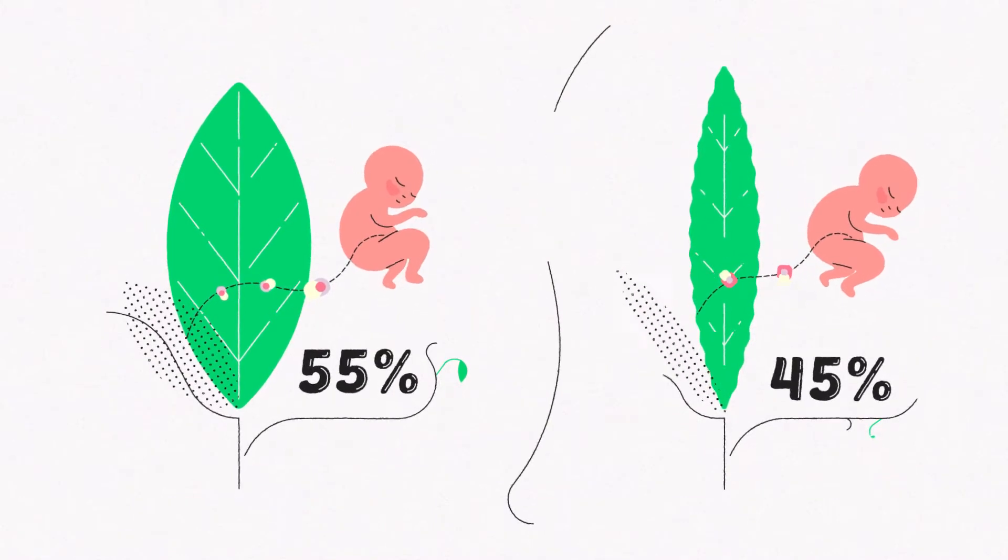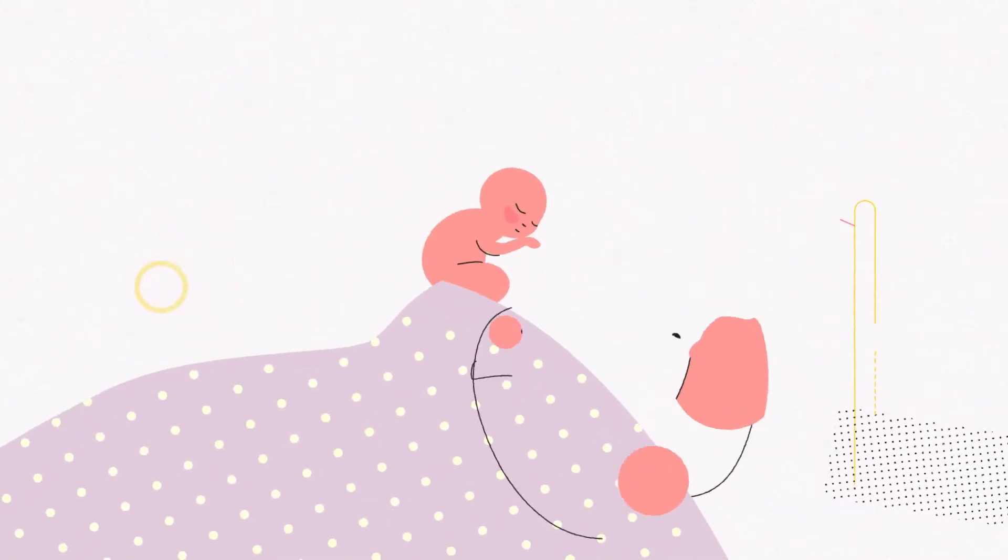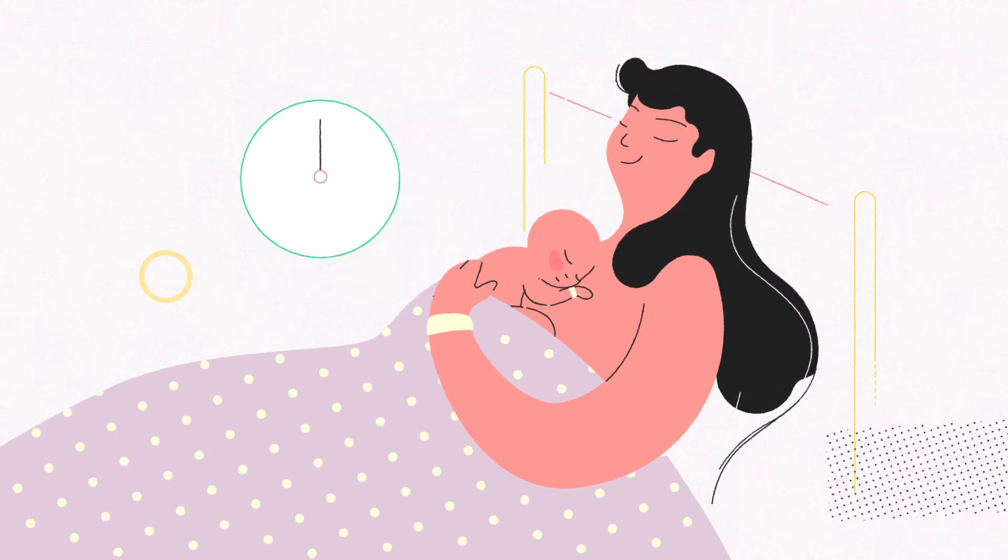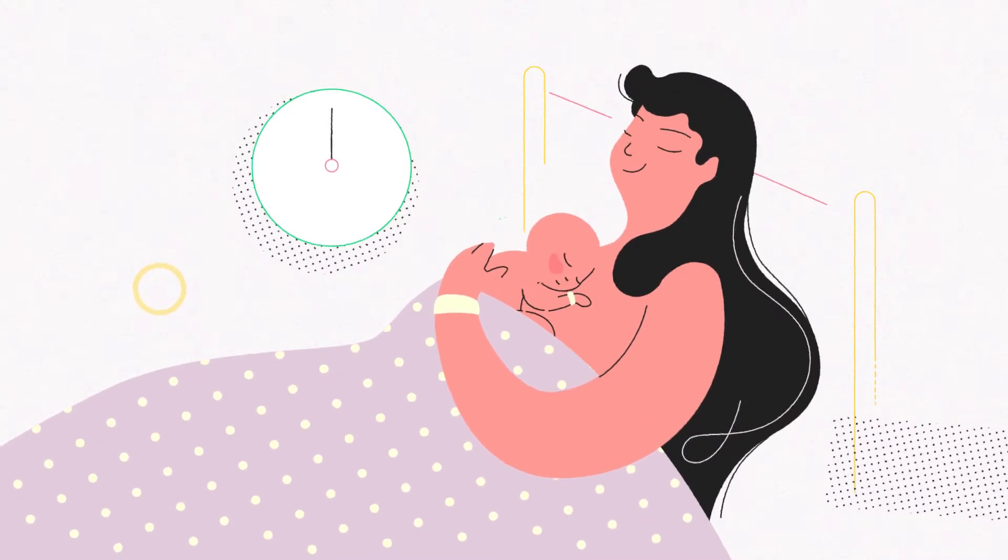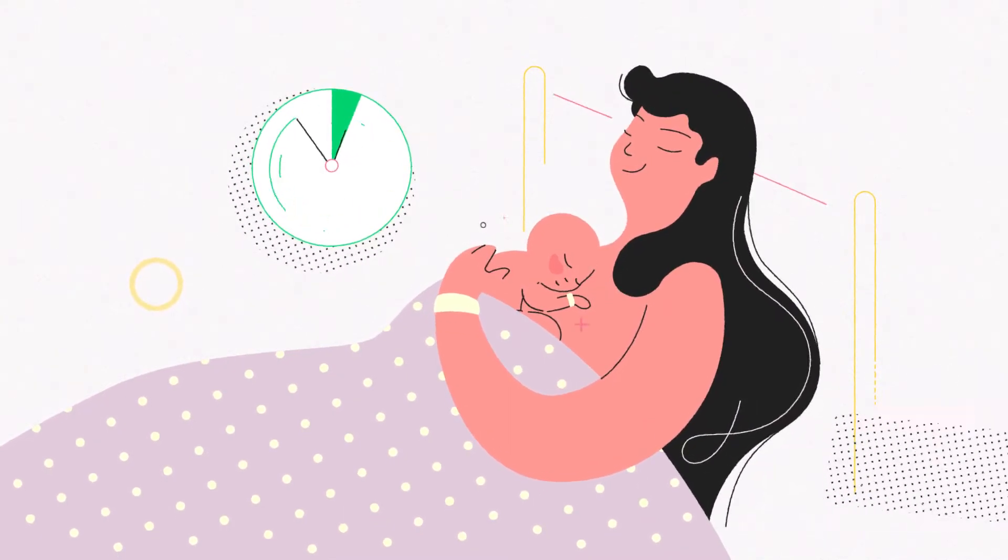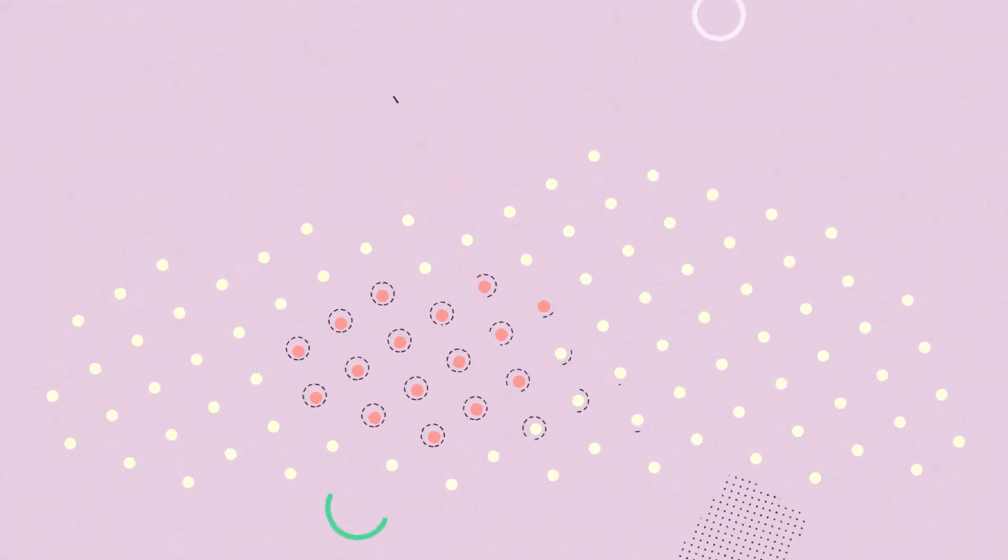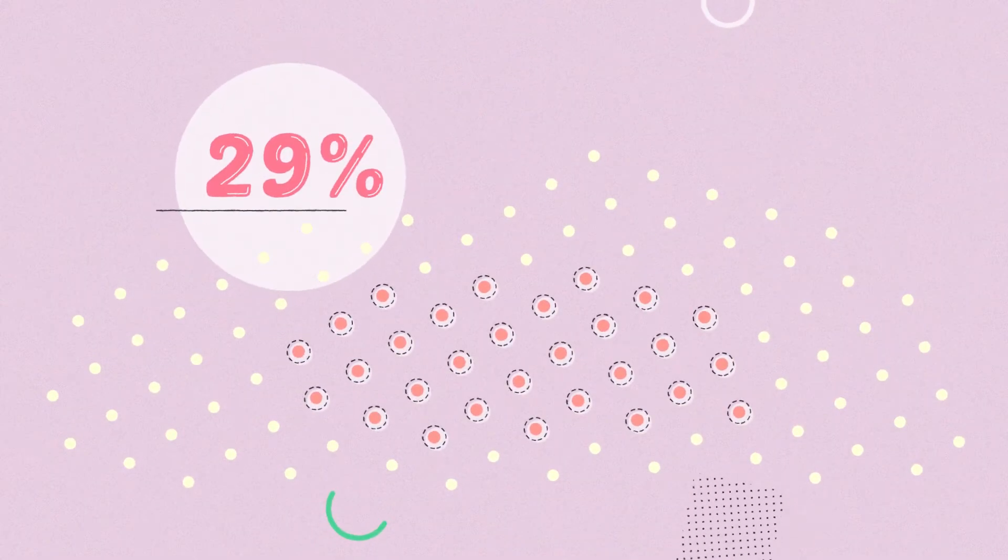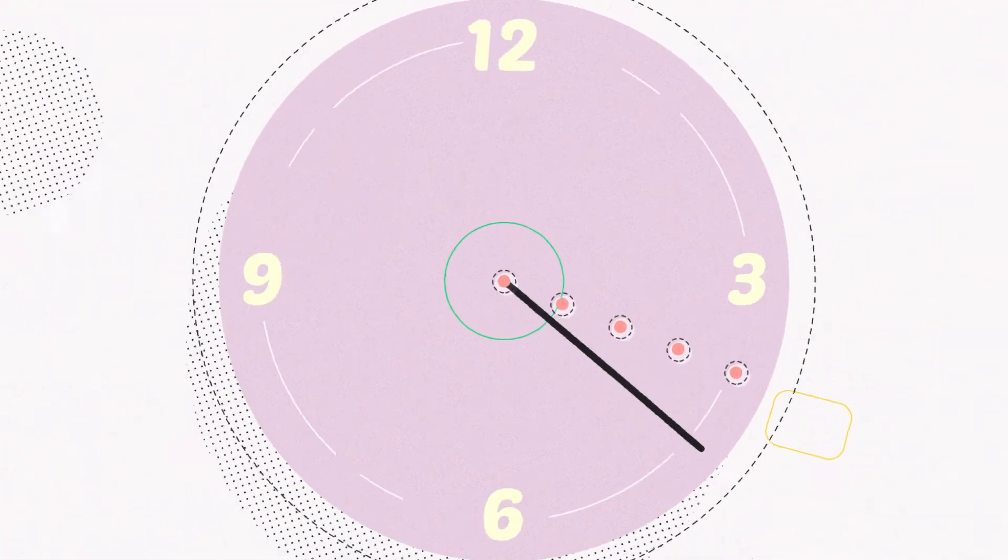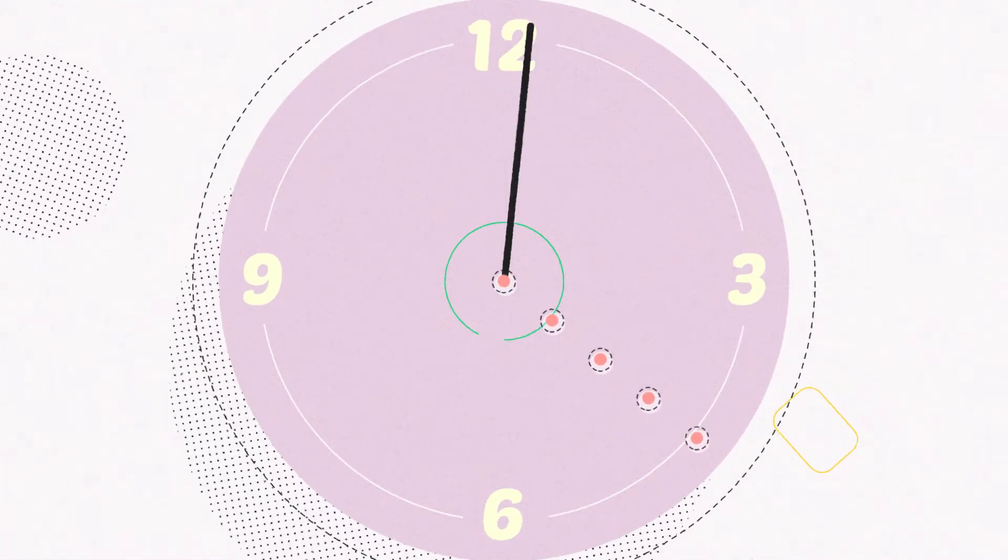It's crucially important that a newborn is given skin-to-skin contact with a mother during the first hour after delivery and that the process lasts for at least one hour. In Georgia, only 29% of babies are given skin-to-skin contact with their mother, and the process lasts for more than an hour in only 5% of the cases.